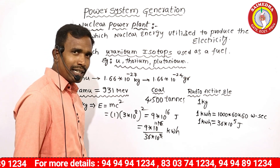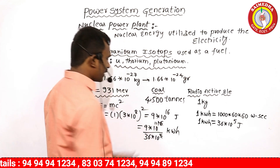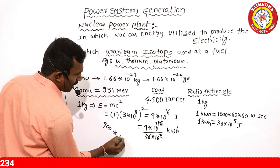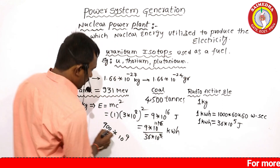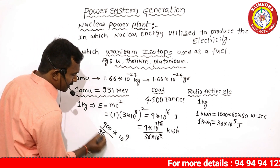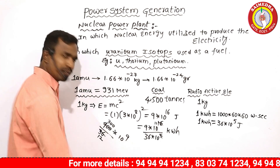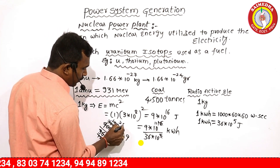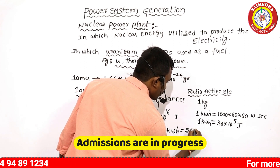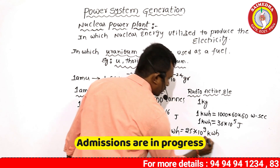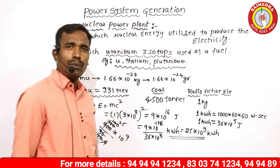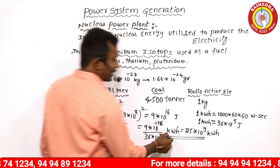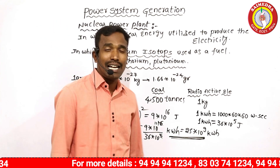After calculation, the answer is 25 × 10⁹ kilowatt hours. So 1 kg of uranium isotope, or 1 kg of radioactive material, produces 25 × 10⁹ kilowatt hours of energy.